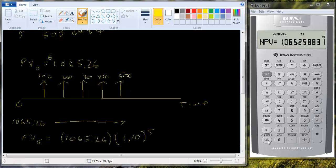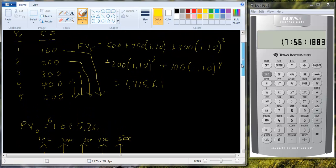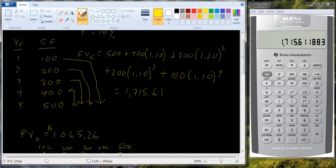Let's see if that works. Okay. So I'll just clear all of this. But 1.1 and we'll raise it, that y to the x key, we'll raise it to the fifth power. And we'll multiply it by 1065.26 and hopefully we get the same answer we had before, which was 1715.61. So you can take advantage of that cash flow function, cash flow worksheet, bring it all back to the present and then bring it out to the future. That's less calculations than calculating each one of these and adding them up.